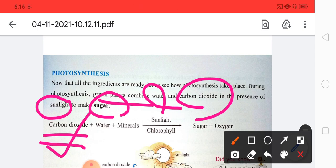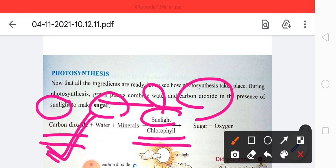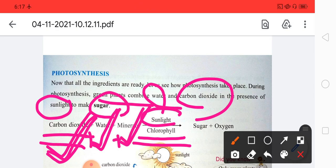You can see what is the equation form. In the presence of sunlight and chlorophyll which is present in the leaf, it takes carbon dioxide from the air through stomata, takes water from the soil and minerals also, and they get together to form sugar in the presence of sunlight.